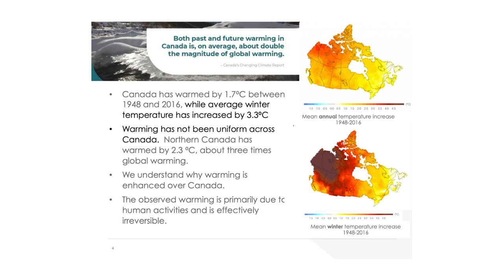Winter is the time period in which warming is most apparent. The take-home message is that over 1948 to 2016, Canada has warmed about 1.7°C, whereas global mean temperature over the same period increased about 0.8°C. So Canada is warming, on average, about twice as fast as the global average. In northern Canada, that warming was 3.3°C — roughly three times the global average. But just as it's not uniform across the globe, it's not uniform across Canada.